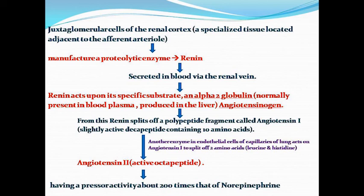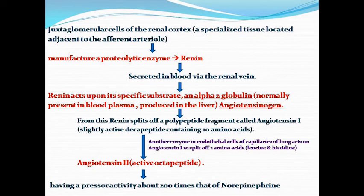These specialized tissues are located in the afferent arterioles. Renin is a proteolytic enzyme secreted into the blood via the renal vein. This renin acts on its specific substrate, alpha-2-globulin angiotensinogen, which is normally present in the blood plasma and is produced in the liver. Renin splits angiotensinogen into polypeptide fragments, forming angiotensin-1. Angiotensin-1 is slightly active and is a decapeptide, consisting of 10 amino acids.